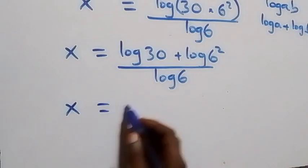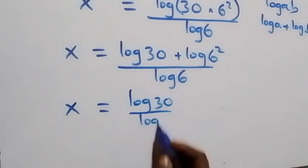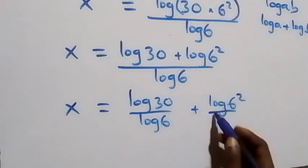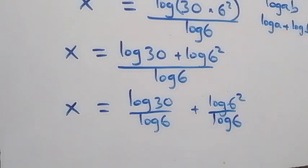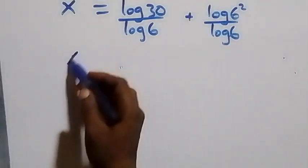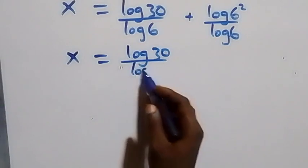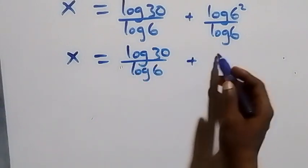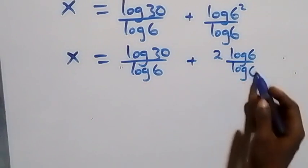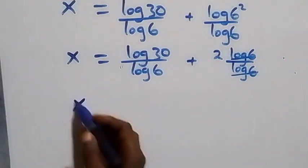We separate this into two fractions: x equals log 30 over log 6, plus log 6 squared over log 6. We apply the power law of logarithm, and the 2 comes down. This becomes x equals log 30 over log 6, plus 2 log 6 over log 6. Log 6 cancels each other, leaving 2.